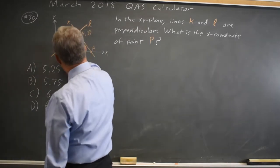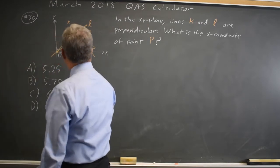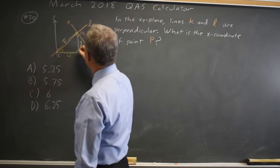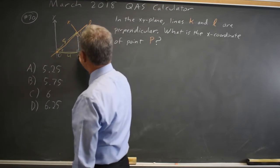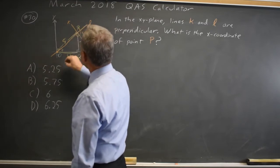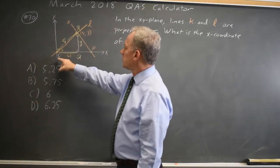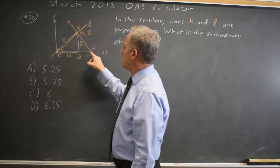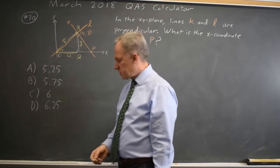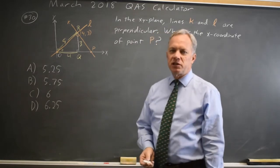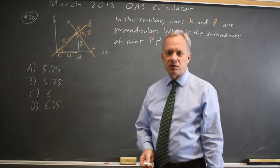We also know that this angle here is in both the smaller triangle I've just drawn, and let's call this Q and this point R. So triangle OQR includes this angle, and triangle ORP includes the same angle, so they are similar triangles. In similar triangles, the ratios of corresponding sides are equal.